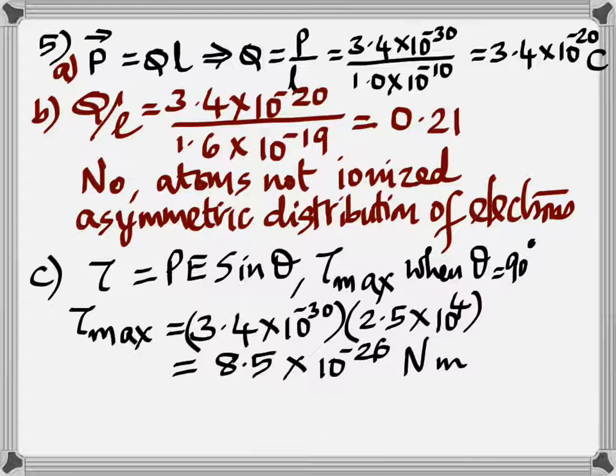And the fifth one, dipole moment is the product of the charge and the length from which you can find the charge in the dipole. When you take the ratio of the charge to the charge of the electron, you get 0.21, which is obviously not an integer because there is an asymmetric distribution of electrons in this case.